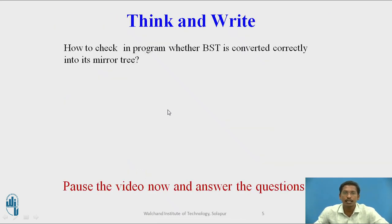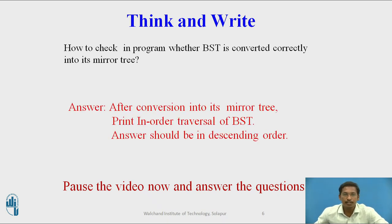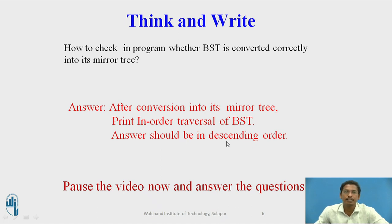You can pause the video and answer: how to check in your program whether the binary search tree is converted correctly into its mirror tree. The answer is: after conversion of the original binary search tree into its mirror tree, we can print the in-order traversal. If the output is in descending order, then we can say that the original binary search tree is converted correctly into its mirror tree.